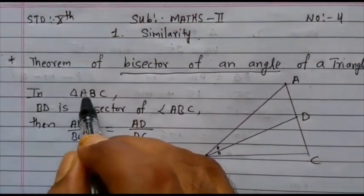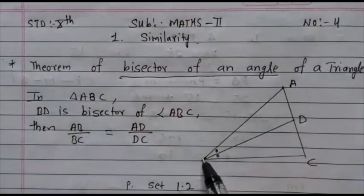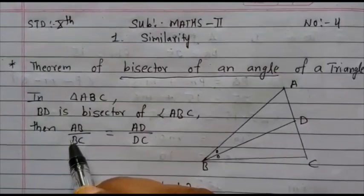Now, write down: in triangle ABC, BD is the bisector of angle ABC, then we have to write by the formula.